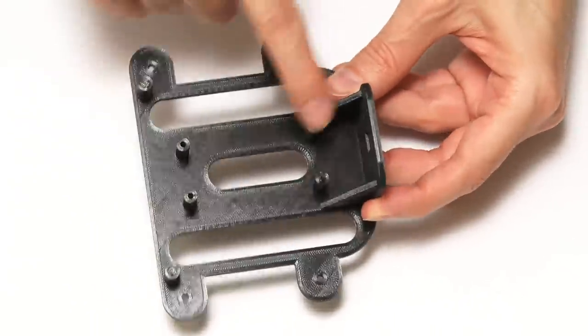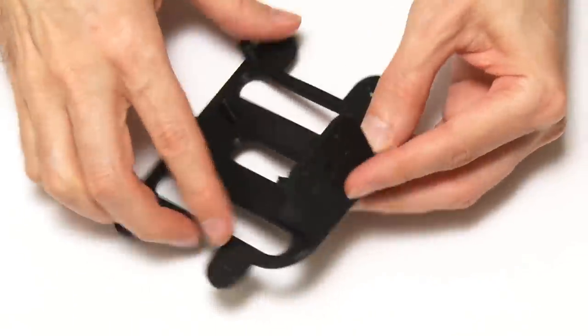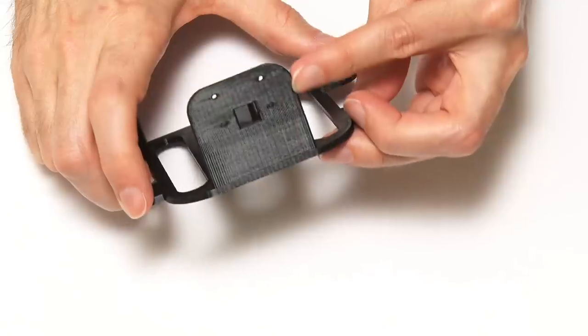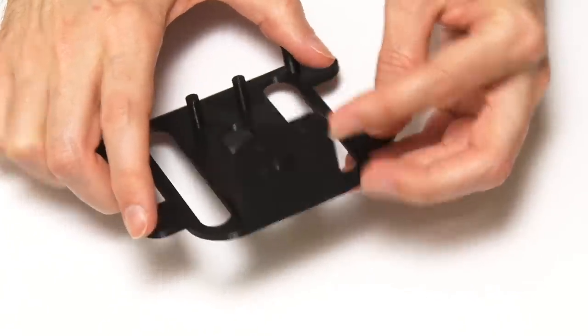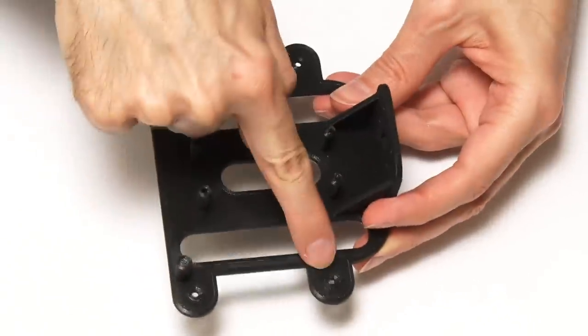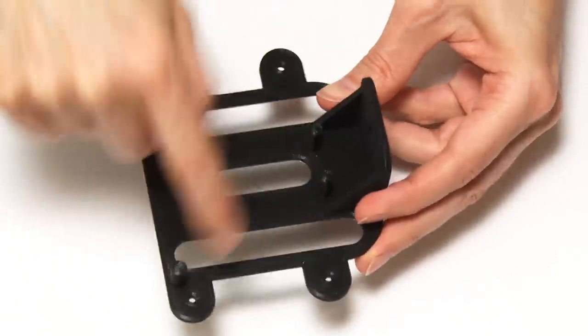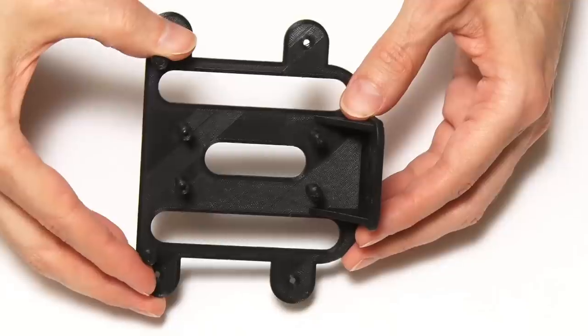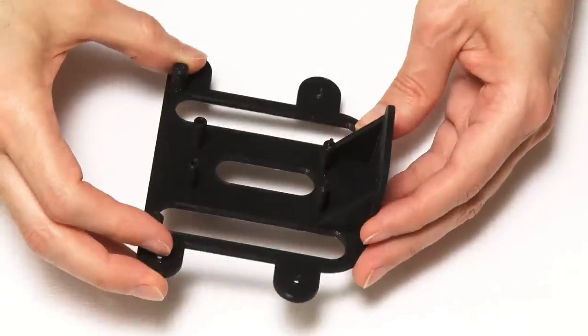This is basically going to have the Pi sitting on top here. The camera will go on the front pointing out through that hole. This is printed in black because I thought it would match the robot. And it's got holes as well to mount on top of the robot and to allow wires through and things like that.